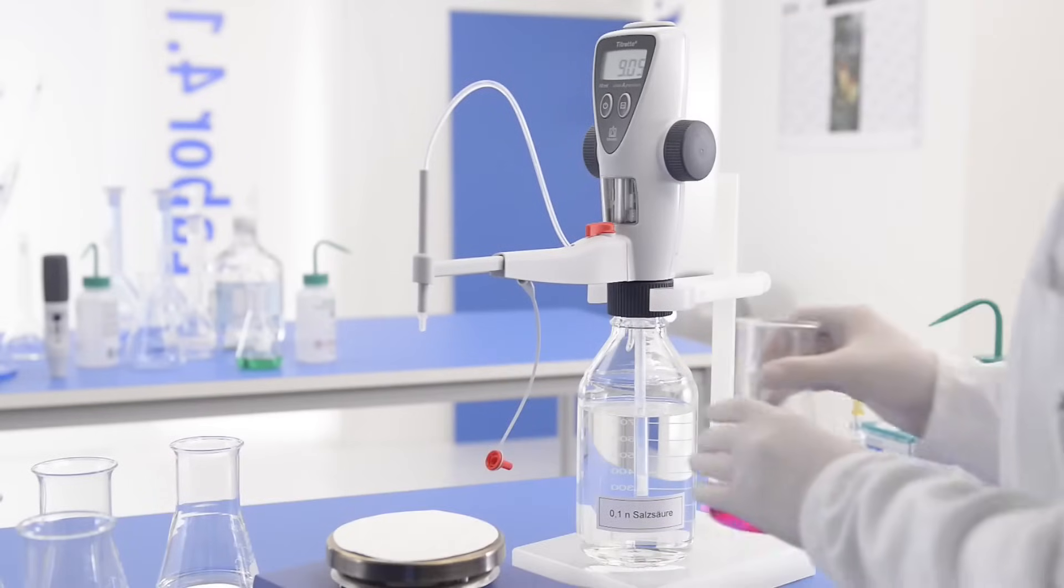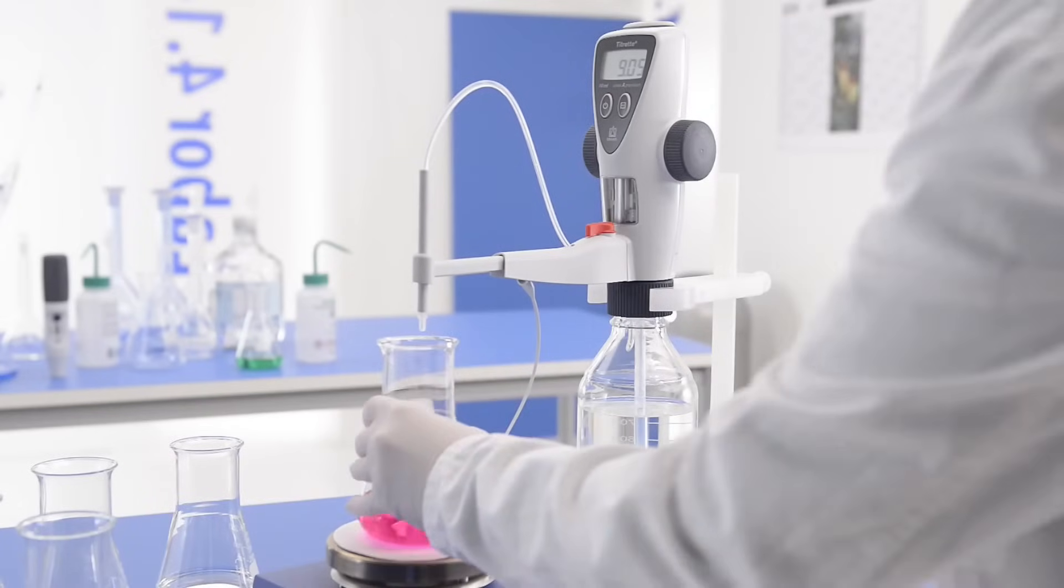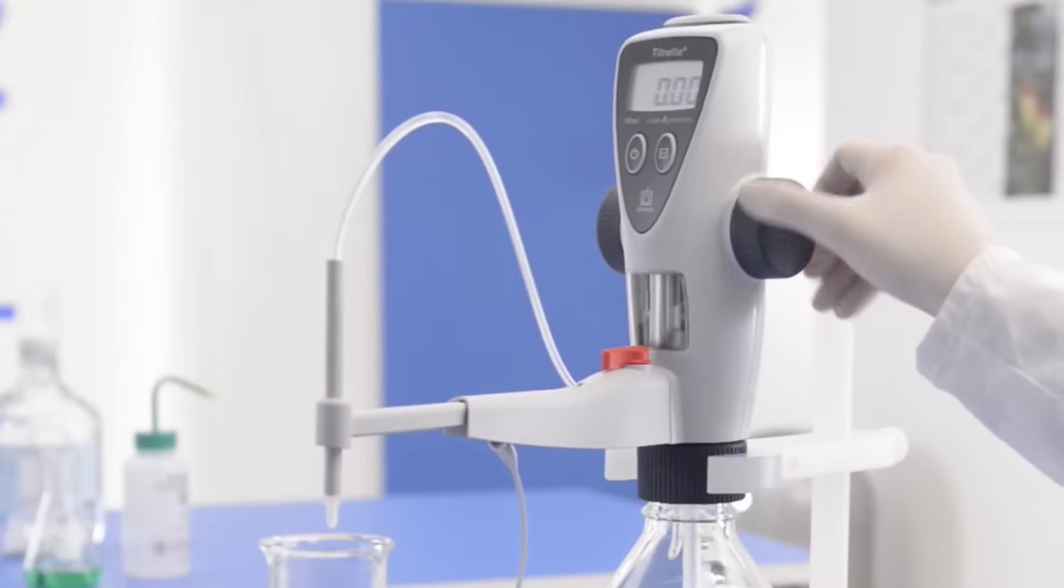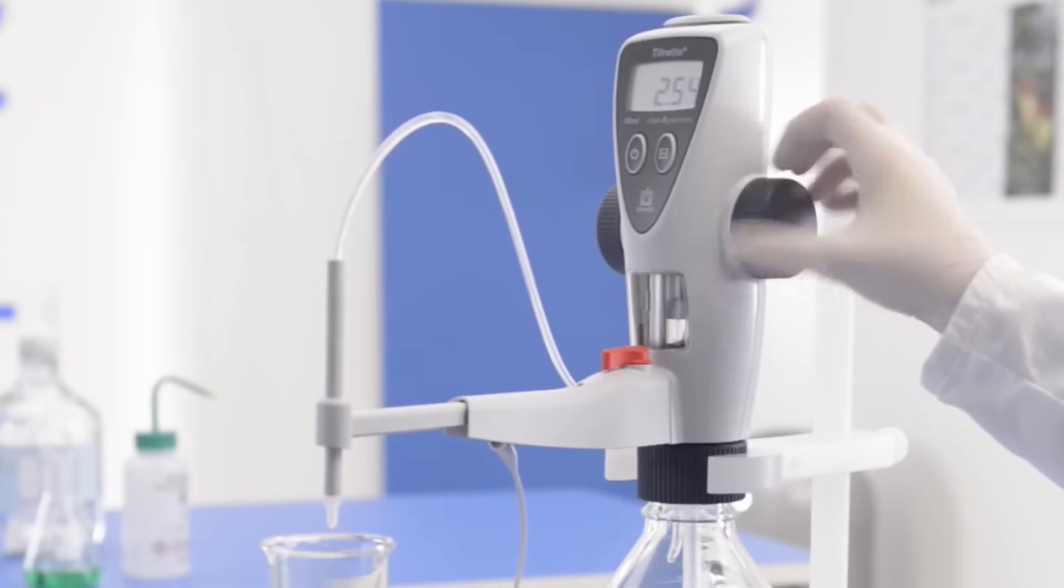Before starting the next titration, set the display back to zero using Clear. To refill the titrette, move the piston upwards until it stops. You are now ready to start the next titration.